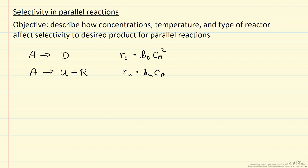What we're interested in is maximizing the formation of D. So we're going to define selectivity. This is instantaneous selectivity. We'll define that as the rate of our desired reaction divided by the rate of our undesired reaction. Let's substitute in these two rates.